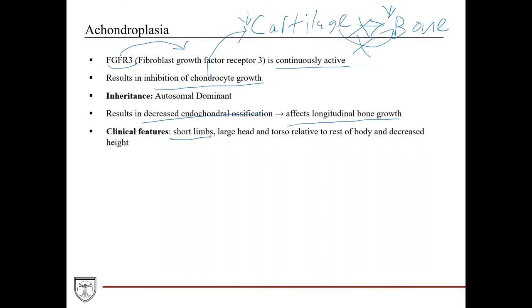The clinical features include short limbs, a large head and torso relative to the rest of the body, and decreased height as a result of the shorter limbs. The inheritance is autosomal dominant.